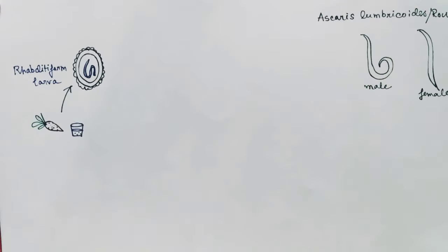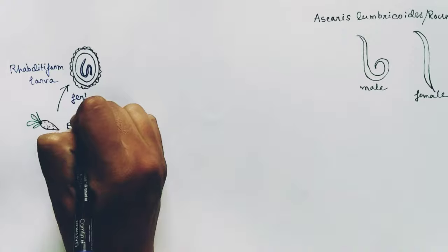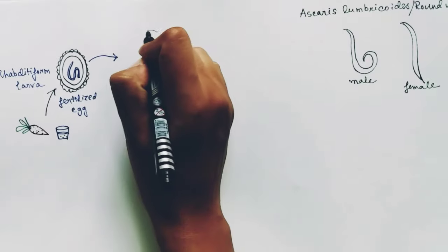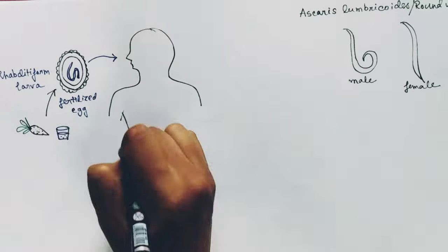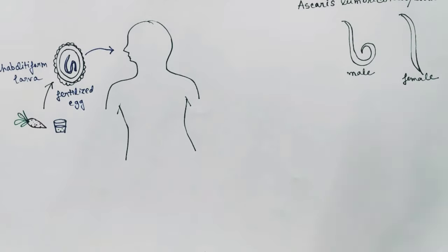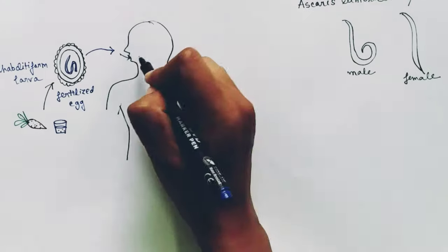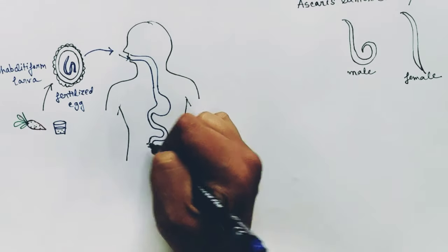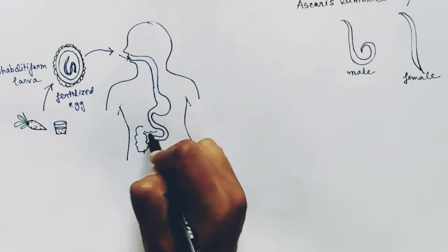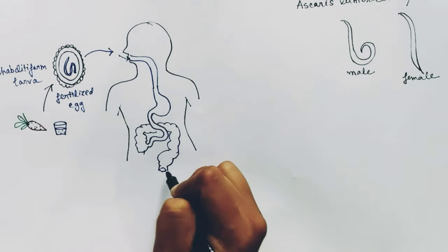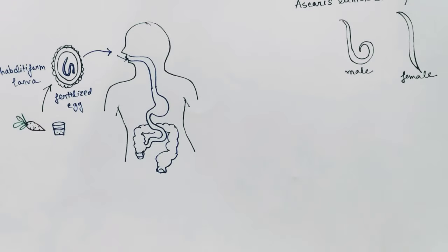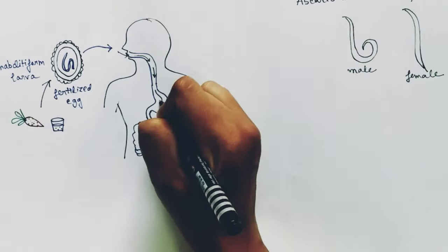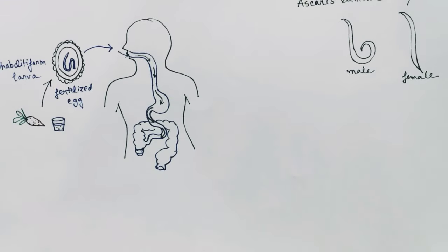When we consume these eggs, they go inside our body through the gastrointestinal tract — through the mouth, down the food pipe, through the stomach and small intestine. The large intestine is the last part of the gastrointestinal tract. When the fertilized egg enters through the mouth, it travels through the food pipe and goes to the small intestine.